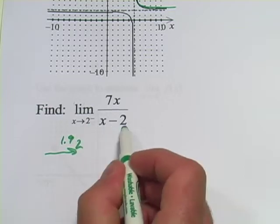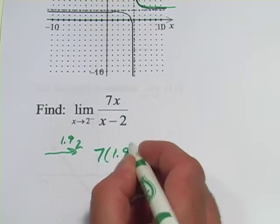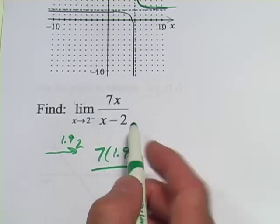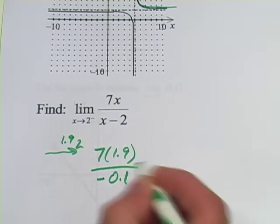So, let's plug in 1.9 and see what we get. We would get 7 times 1.9, and that'd be pretty close to 14. And we'd get x minus 2, so 1.9 minus 2, that's going to be negative 0.1.